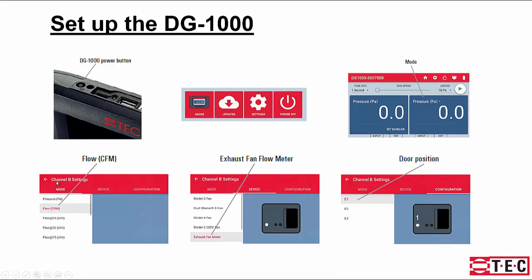The channel B settings page will come up. The first tab is mode, and you'll choose flow. The next tab over is device, and for the device, you'll choose exhaust fan flow meter.